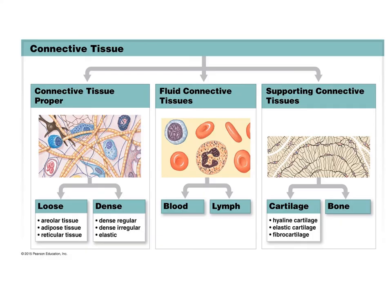Dense regular connective tissue has primarily parallel collagen fibers, a few elastic fibers, and the major cell type is the fibroblast. It attaches muscles to bones or to muscles and bones to bones, withstanding great tensile stress when pulling force is applied in one direction. It is located in tendons and most ligaments. Dense irregular connective tissue has irregularly arranged collagen fibers and some elastic fibers; it functions to withstand tension in many directions and provide structural strength, and is found in fibrous capsules of organs and joints, dermis of the skin, and submucosa of the digestive tract.